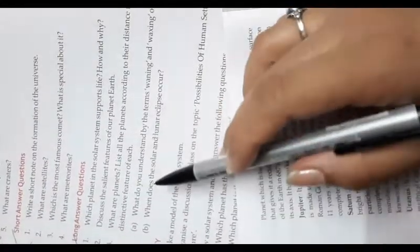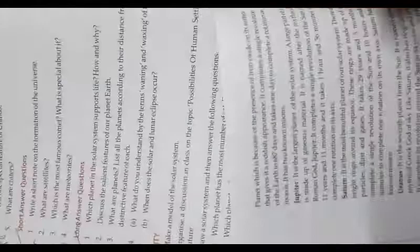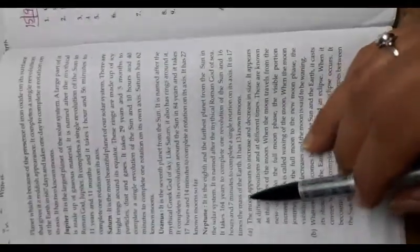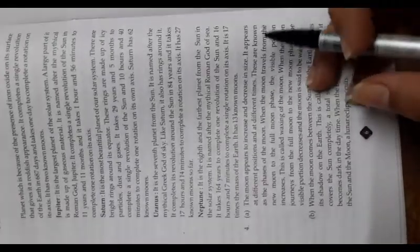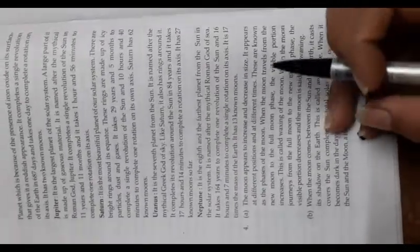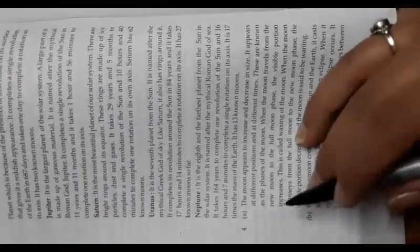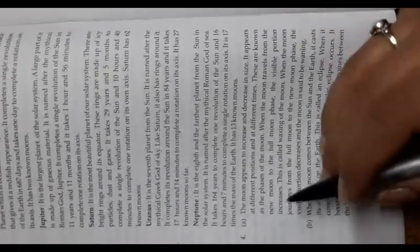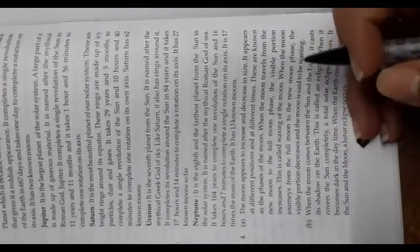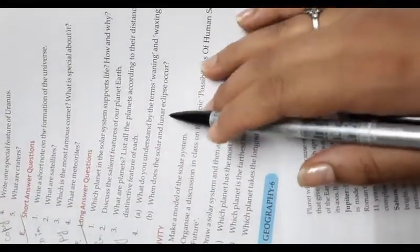Question 4a: What do you understand by the waning and waxing of the Moon? The Moon appears to increase and decrease in size, appearing at different positions and in different shapes at different times — these are known as the phases of the Moon. When the Moon travels from the new moon to the full moon phase, the visible portion increases — this is called waxing of the Moon. When the Moon journeys from the full moon to new moon phase, the visible portion decreases — the Moon is said to be waning.